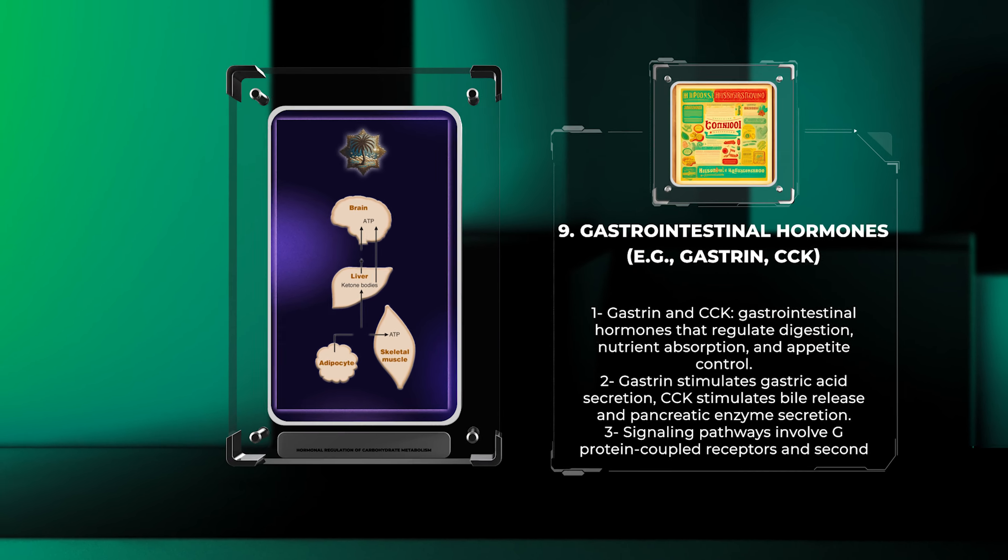Ghrelin, predominantly synthesized by stomach cells, is known as the hunger hormone due to its orexogenic effects. Ghrelin stimulates appetite, gastric motility, and growth hormone release. The ghrelin receptor signaling pathway involves activation of G-protein-coupled receptors and subsequent modulation of second-messenger cascades, including the cAMP/PKA pathway.